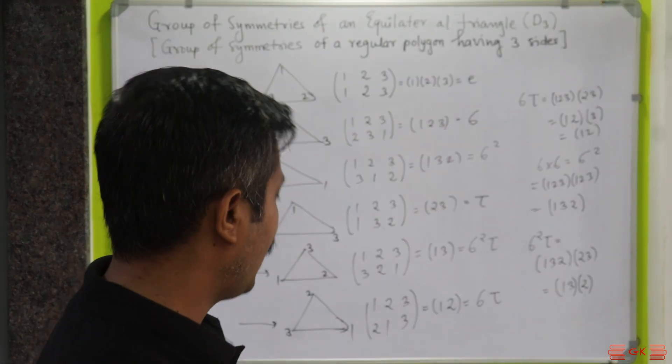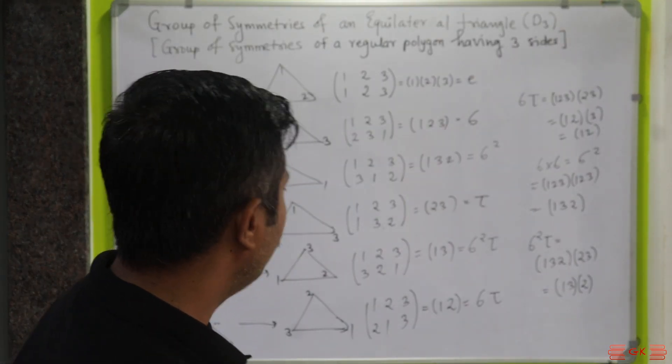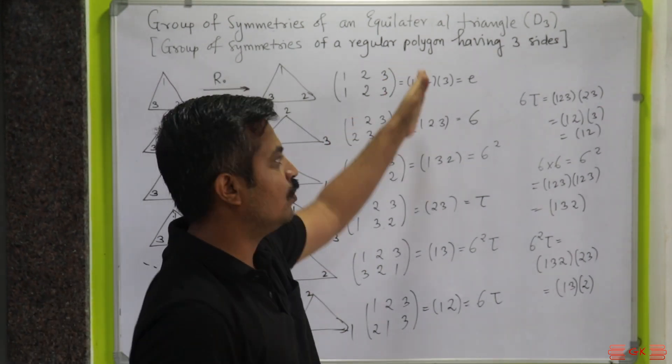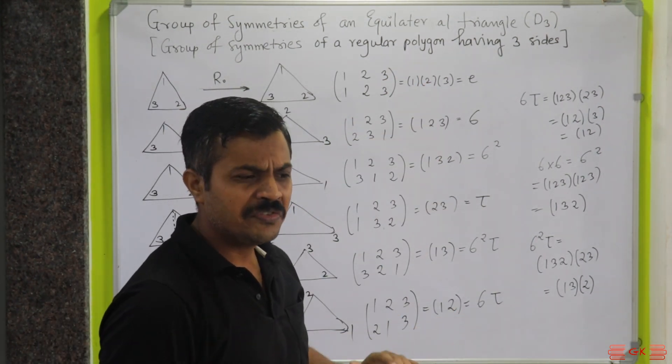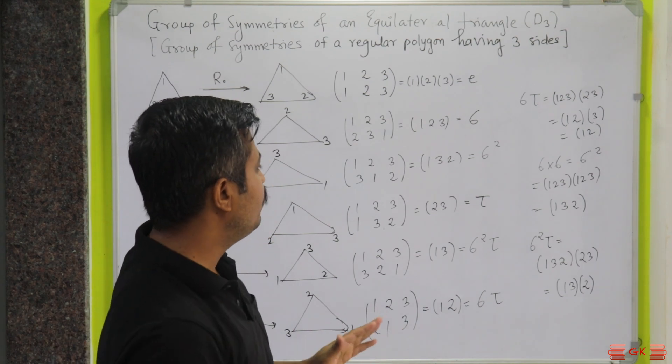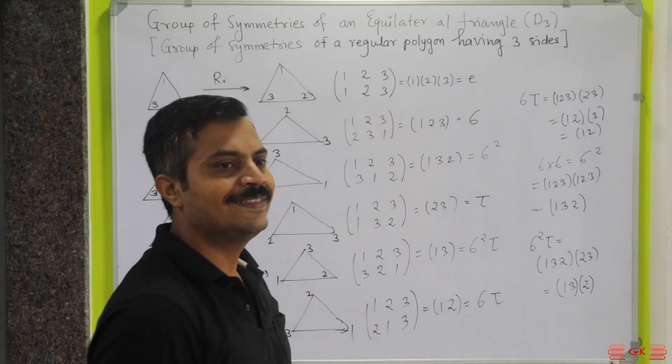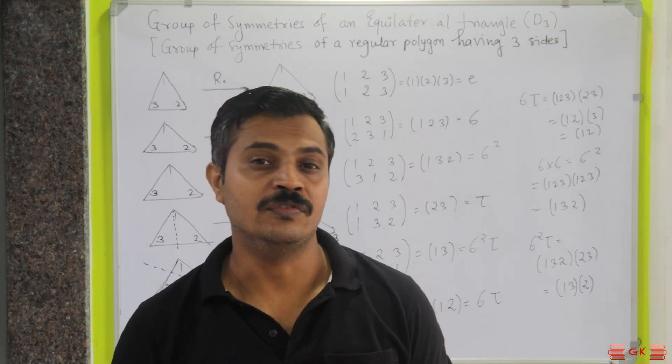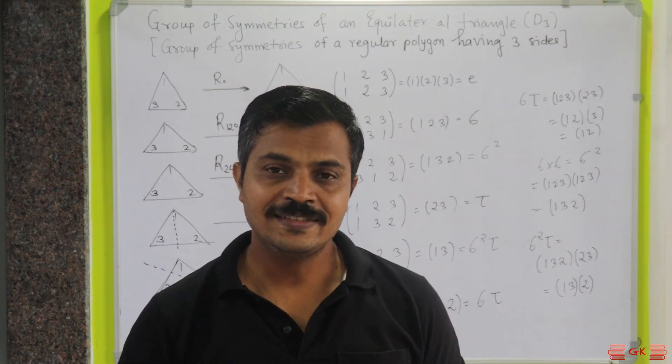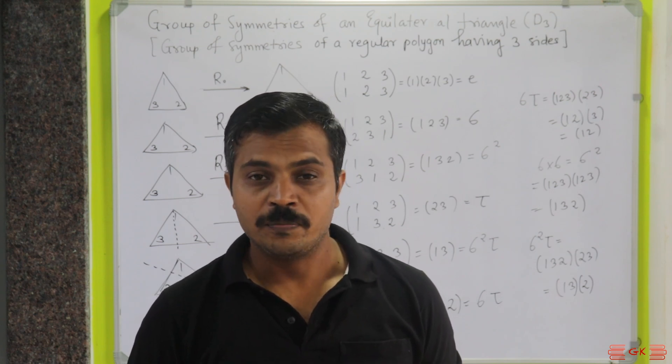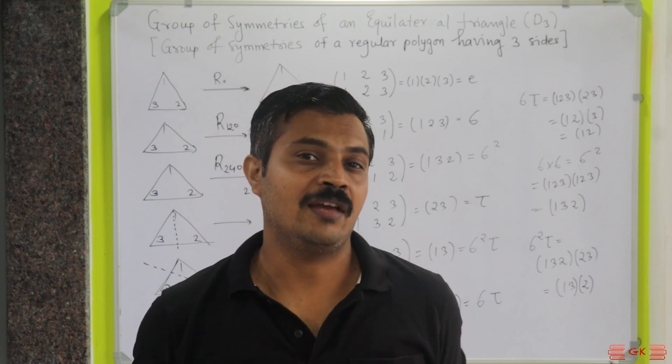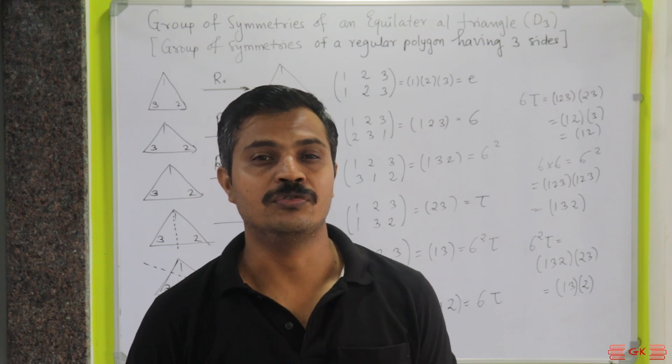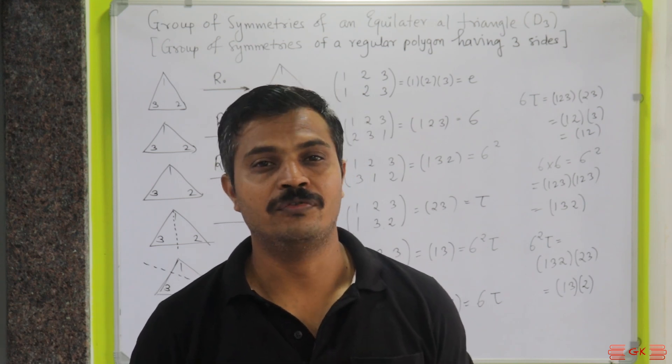So this is actually the notations that we are going to use. Now, the rest of the thing is easy. We will simply draw the composition table for the six elements, and you can verify all the conditions of the group. You will notice that the table will not be symmetric again, and therefore, this is again going to be an example of a non-abelian group.